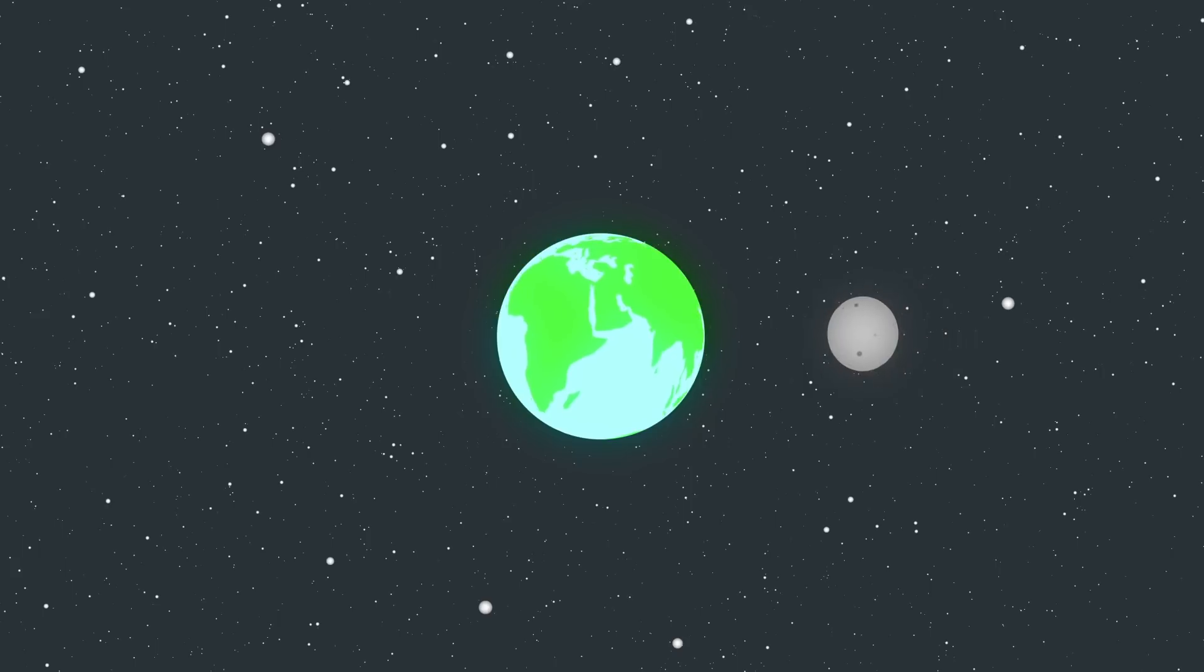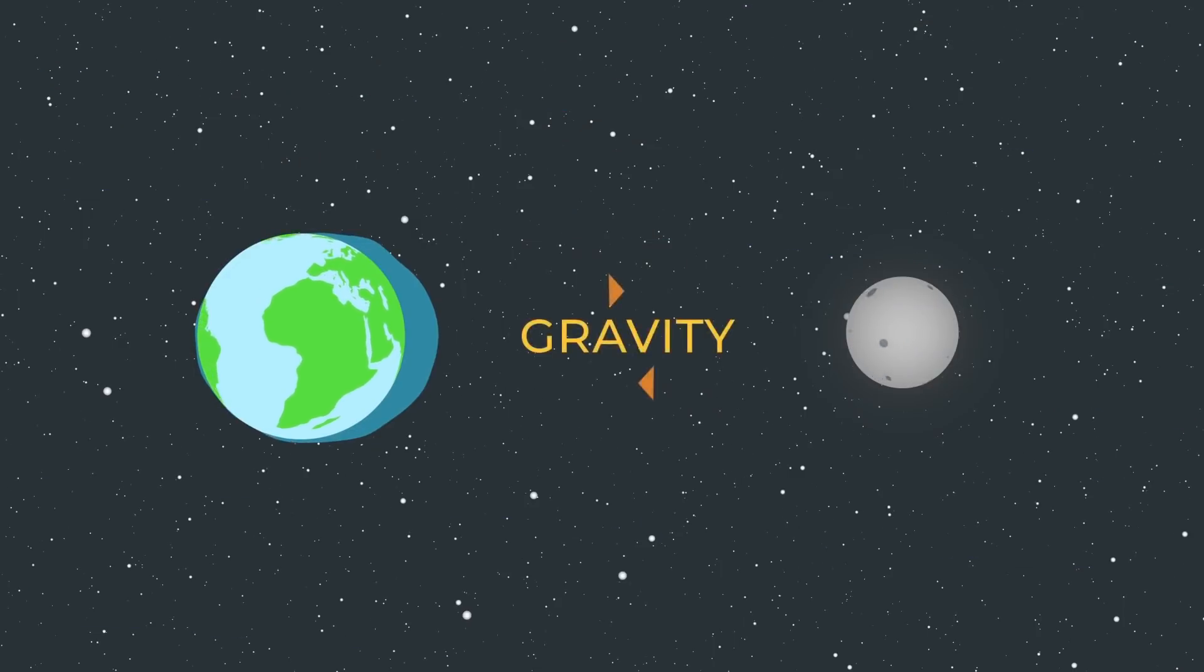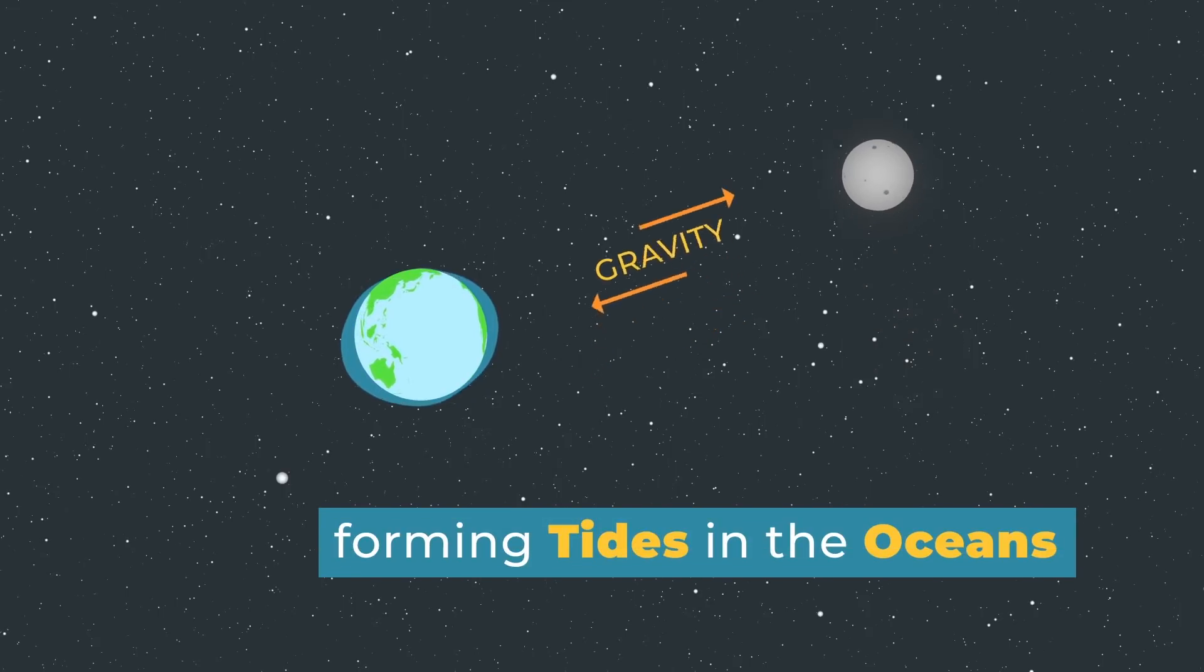As the fast spinning earth attempts to drag ahead of the sluggishly orbiting moon, it causes the moon to slow down on its rotation. And at the meantime the earth also slows down its rotation, losing a lot of energy due to friction on the inside, causing the formation of tides in the oceans.